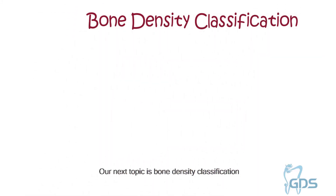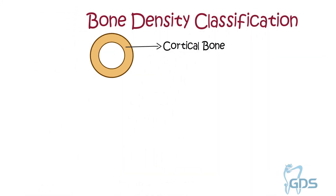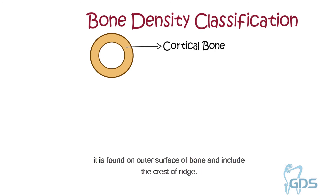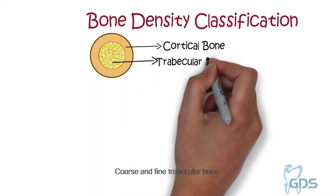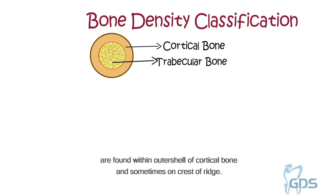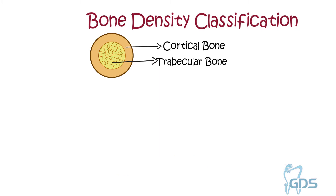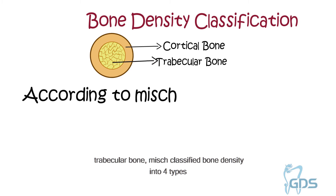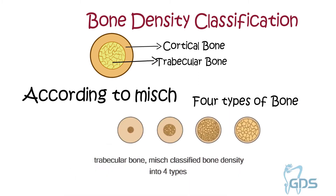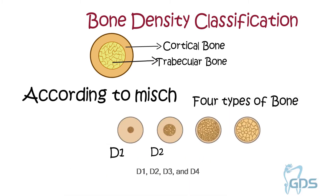Our next topic is bone density classification. Dense or porous cortical bone is found on the outer surface of the bone and includes the crest of the ridge. Coarse and fine trabecular bone are found within the outer shell of the cortical bone and sometimes on the crest of the ridge. According to the arrangement of cortical bone and trabecular bone, bone density is classified into four types: D1, D2, D3, and D4.